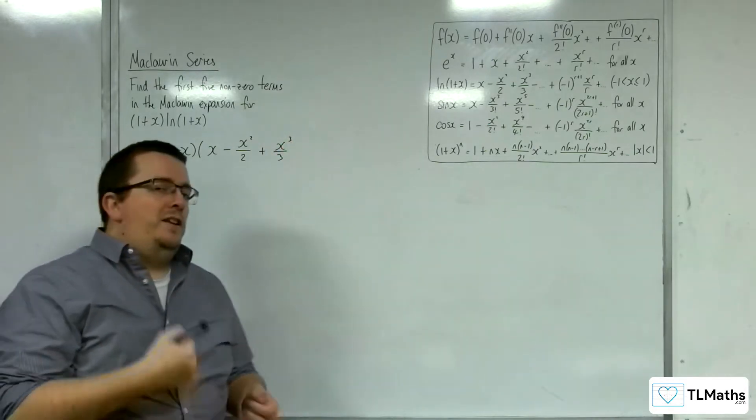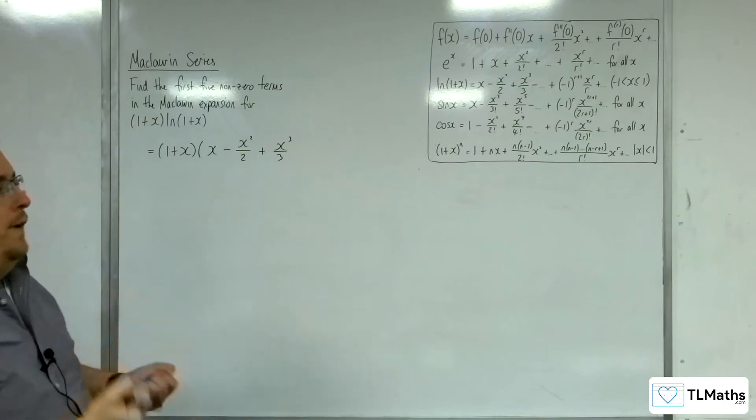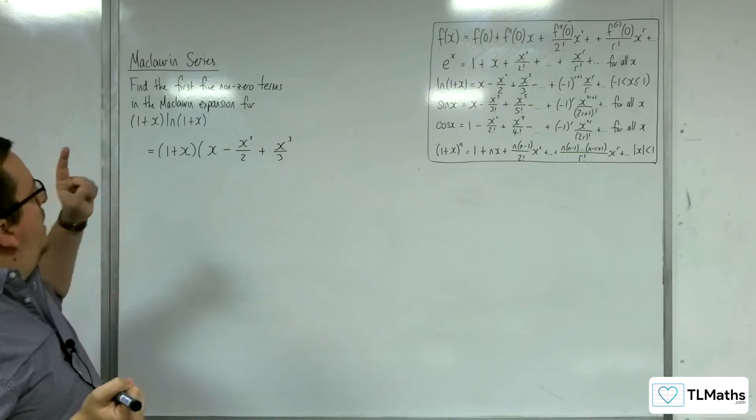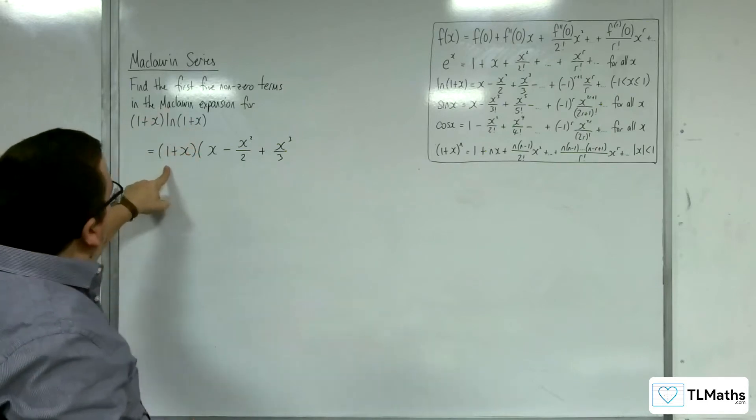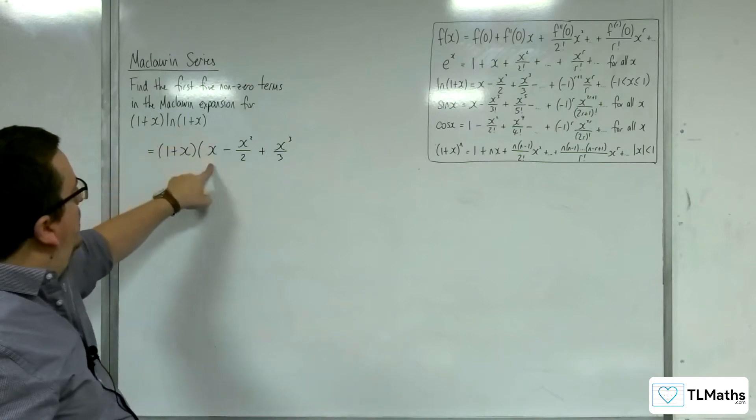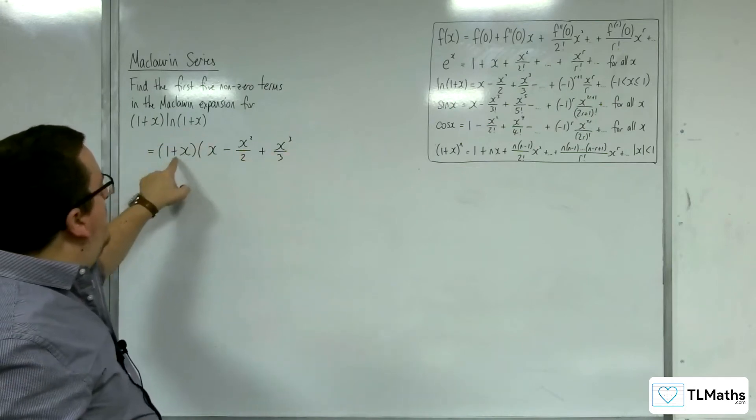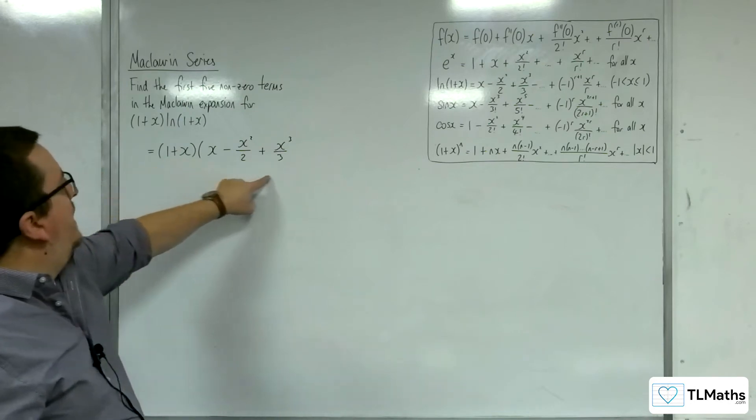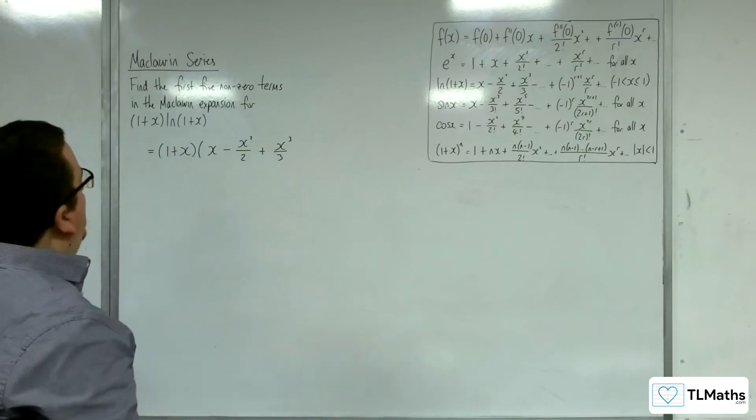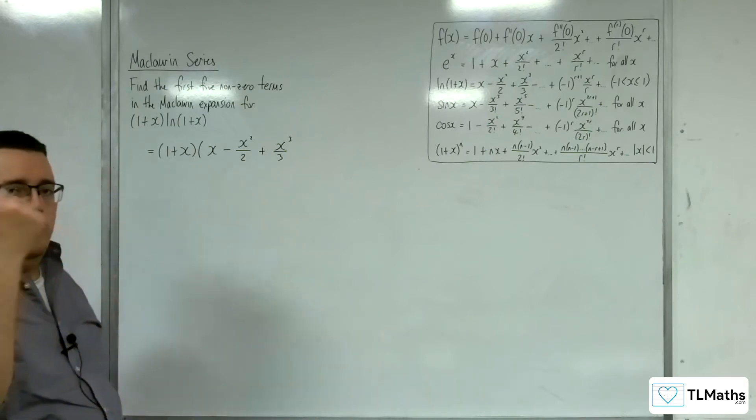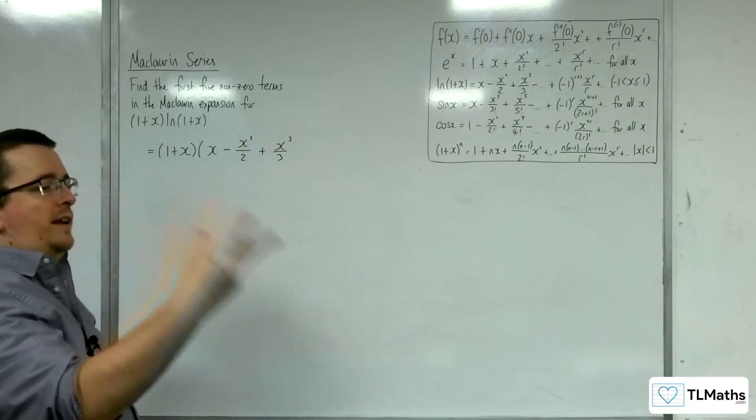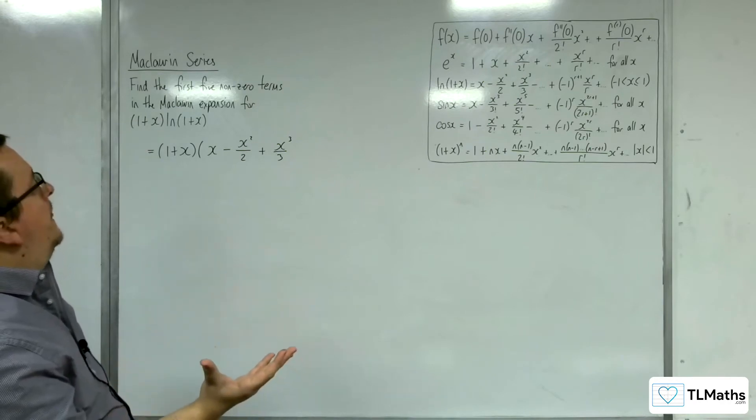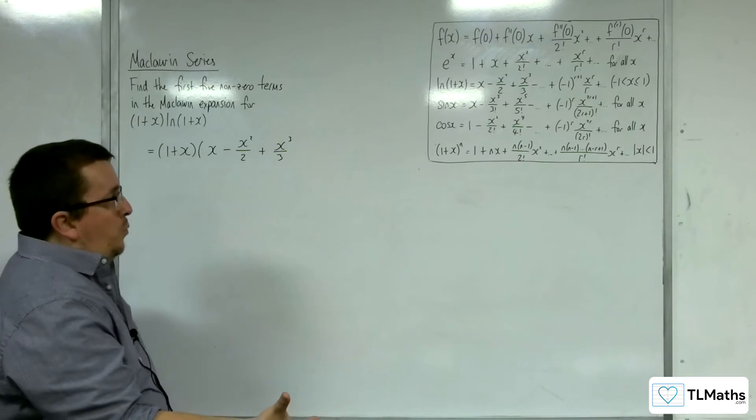Now we need to have a consideration for how far I'm going to need to go. Because ultimately, I need the first five non-zero terms. So I'm going to be multiplying out these two brackets. That's 1 multiplied, which is going to get me up to x³. x is then going to get me up to x⁴. So the first term I'm going to get is some multiple of x, then x², then x³, then x⁴, then I need x⁵. So I'm going to need to go at least one step more.